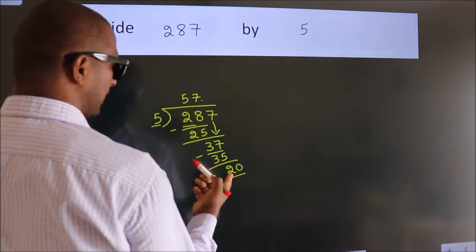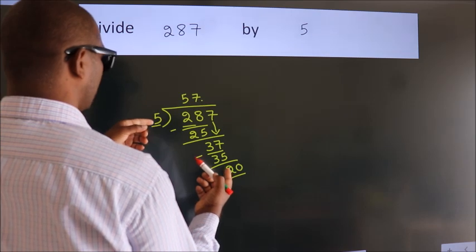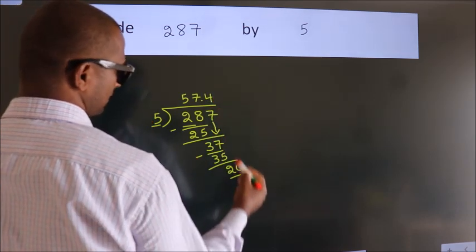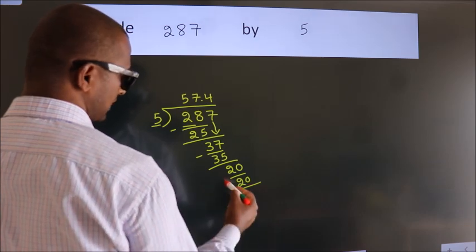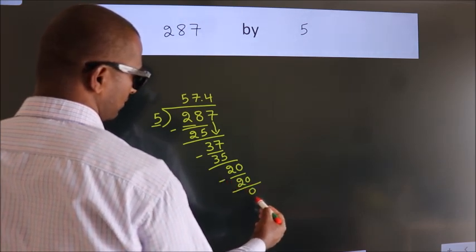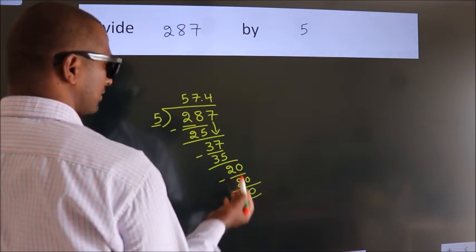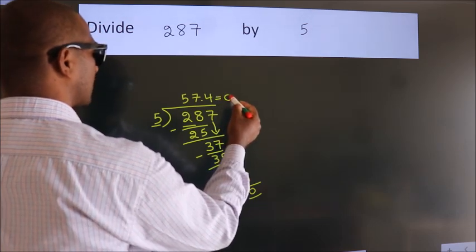When do we get 20 in the 5 table? 5 times 4 equals 20. Now we subtract, we get 0. We got remainder 0, so this is our quotient.